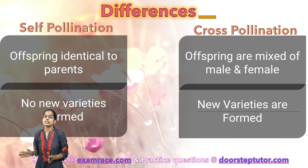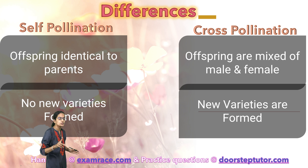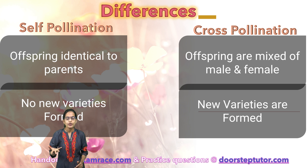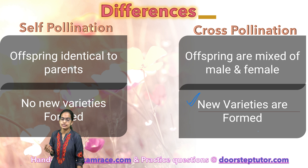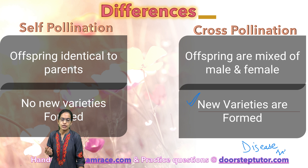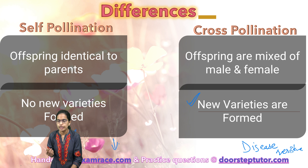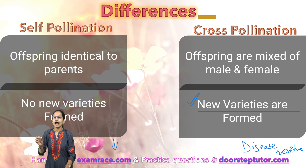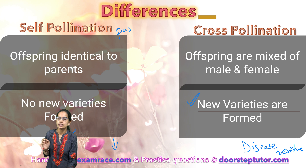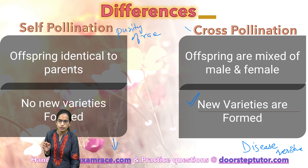In self-pollination, no new varieties are formed. However, in cross-pollination we see new varieties and therefore better resistance to diseases. Disease resistance is better in cross-pollination, but decreases in self-pollination because the varieties are not crossed. Self-pollination maintains the purity of race, which is not the case in cross-pollination.